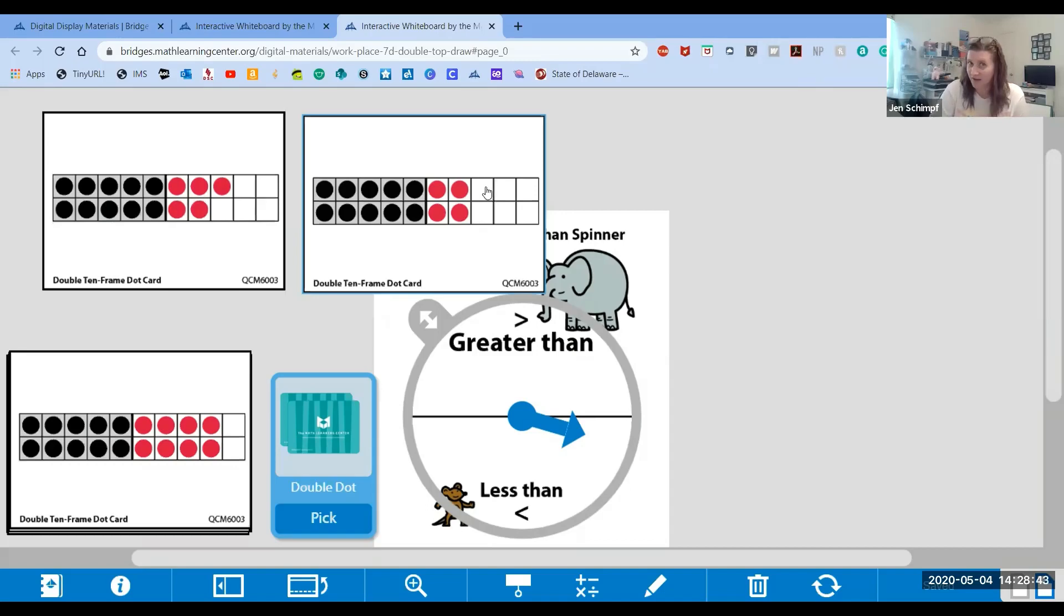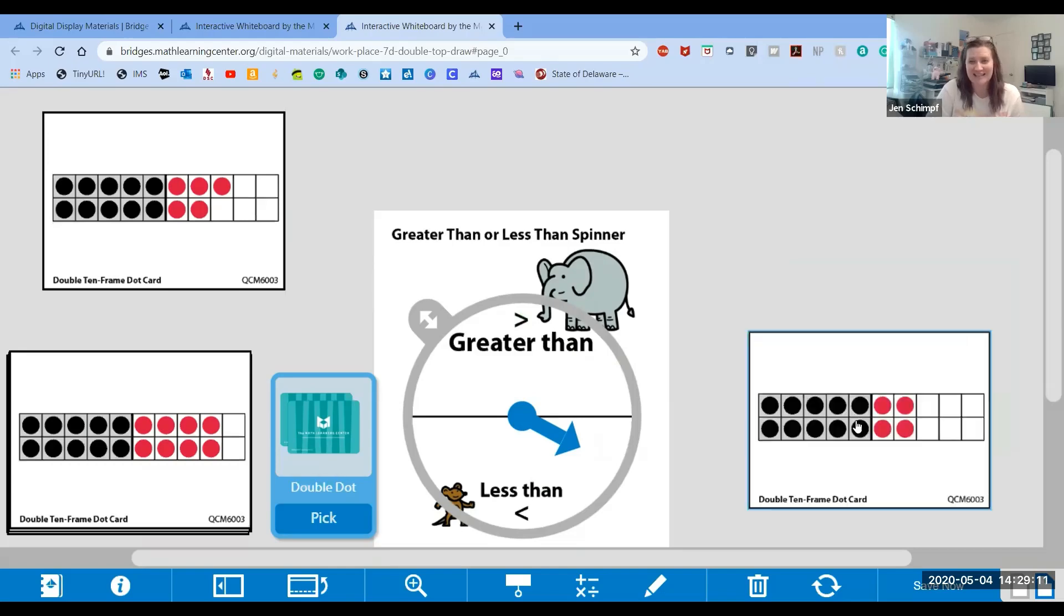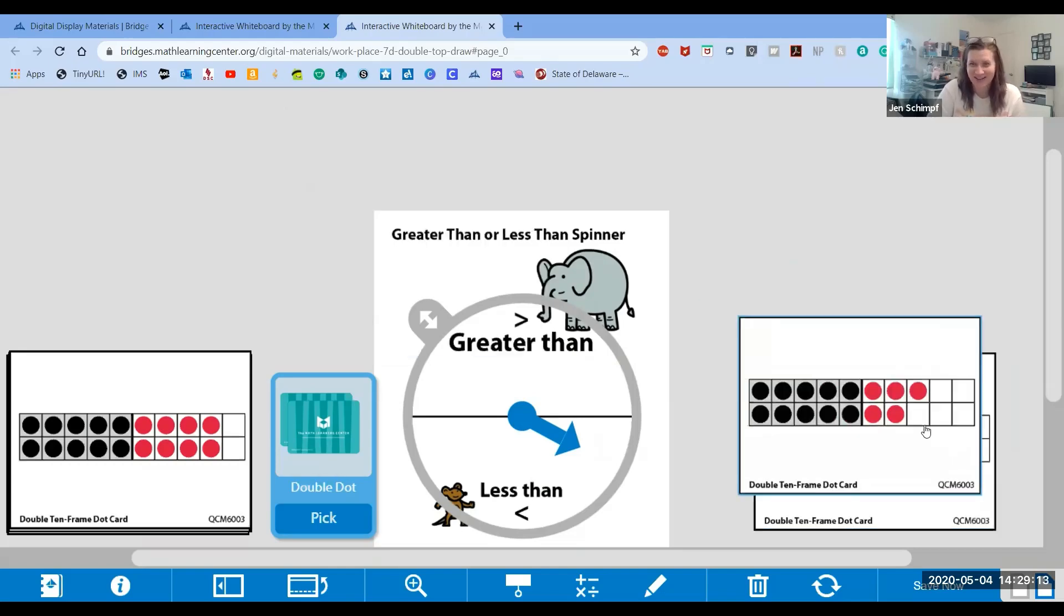Well, I don't have that dot right there. So I wonder how many I have. Can you tell without counting? One less than 15 is 14. 10 and four more makes 14. Go ahead and spin. Right on the line. Oh my goodness. Let's spin again. Less than. Which number is less? 14 is less. I got some cards.